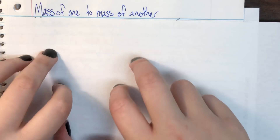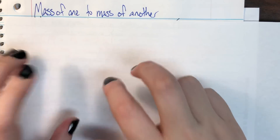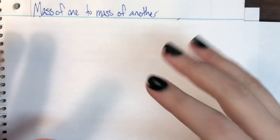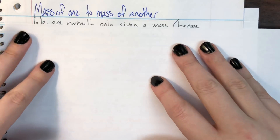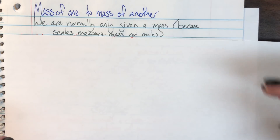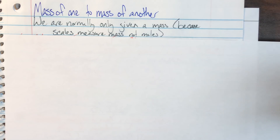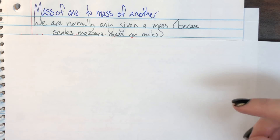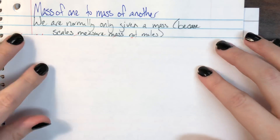Today we're going to be talking about going from mass of one thing to the mass of another. That's because in the real world, we measure things on scales, and scales don't measure things in moles — they measure them in grams. So when we're given something, we're generally going to be looking at the grams of that particular thing.